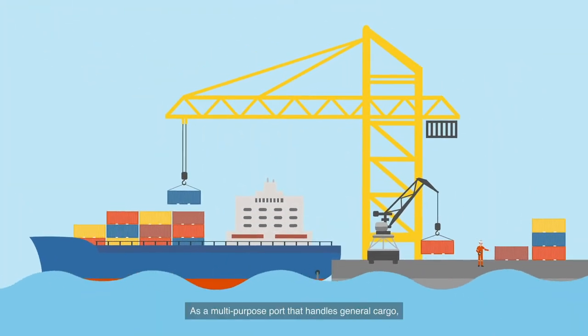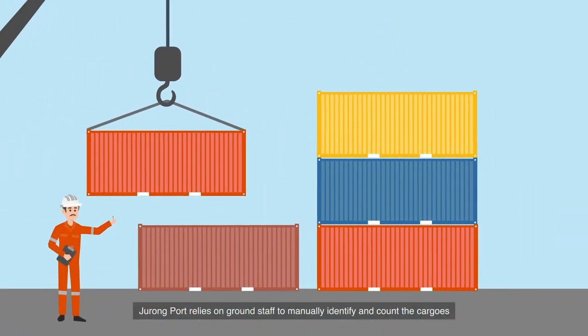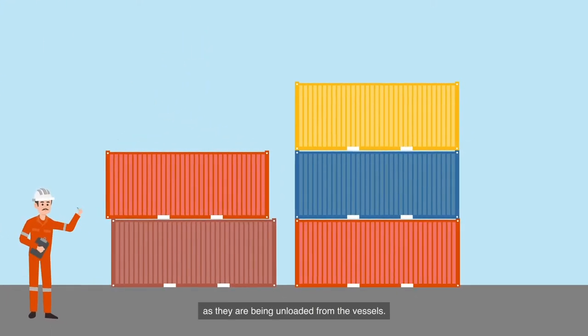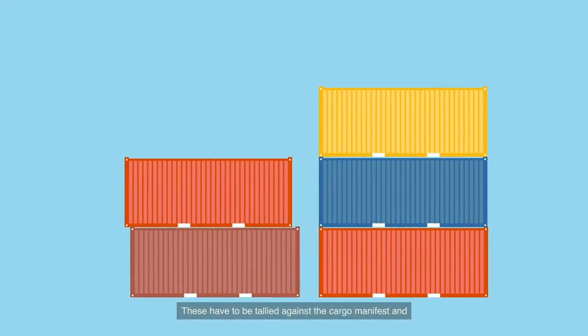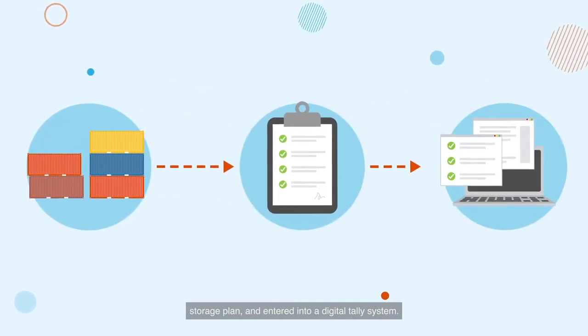As a multi-purpose port that handles general cargo, Jurong Port relies on ground staff to manually identify and count the cargoes as they are being unloaded from the vessels. These have to be tallied against the cargo manifest and stowage plan and entered into a digital tally system.